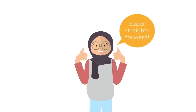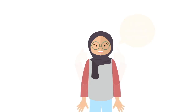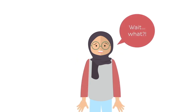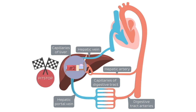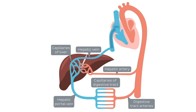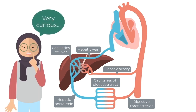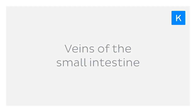But did you know that not all blood circulation follows this pattern? Deoxygenated blood, drained from certain organs, is sometimes drained through what's known as the portal system into a second capillary bed before being returned to the heart. Where does this happen and why? Let's find out more as we explore the veins of the small intestine.